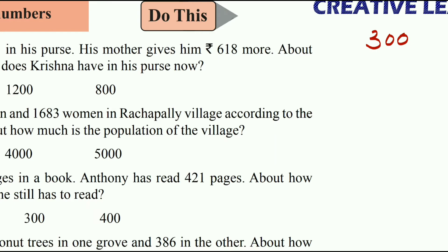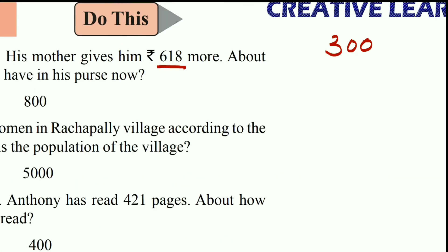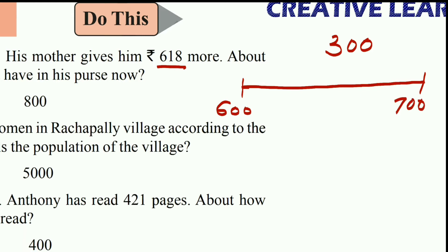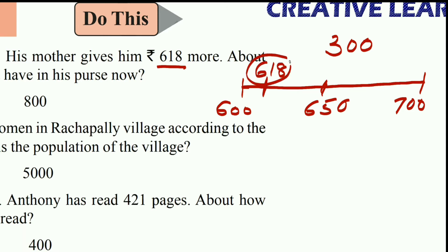Next, how much money did his mother give? 618 rupees. The range is 600 to 700, with the middle number being 650. Now 618 comes before 650, so we write 618 on the number line.